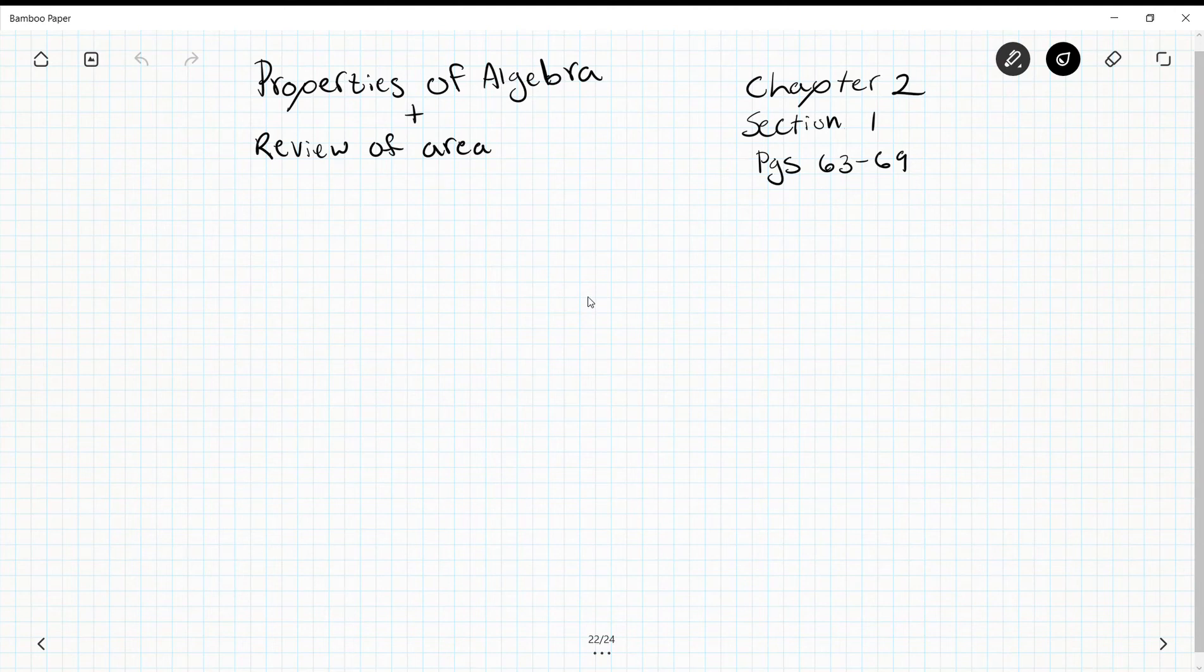In today's lesson we're going to be looking at a couple of properties of algebra from chapter 2 section 1, as well as a review of area. This comes right after section 1 and is something that we did last year and is necessary for the following lesson.